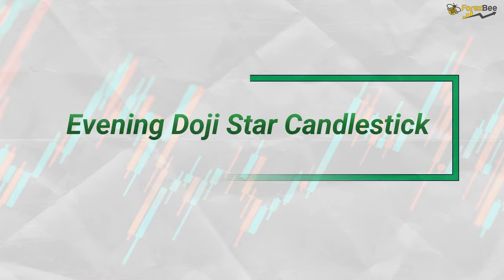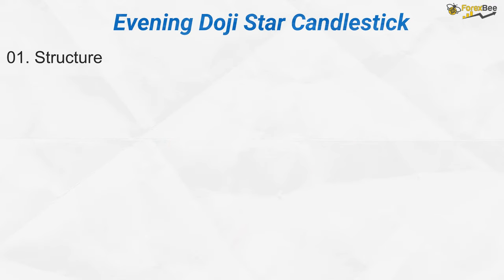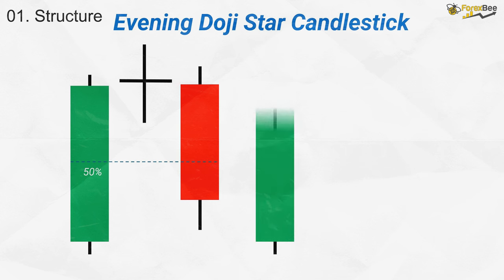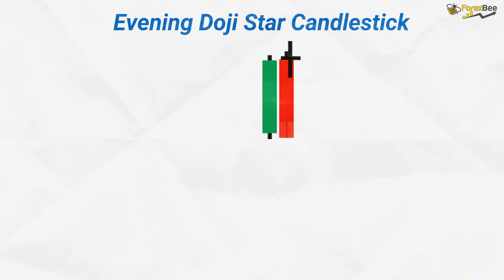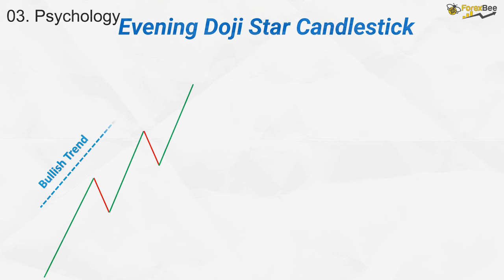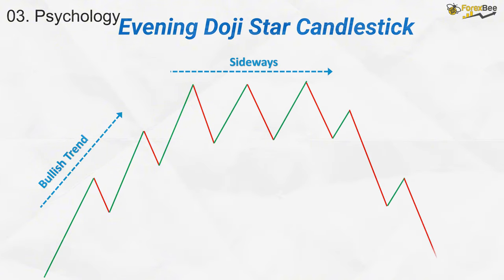Now, let's discuss the Evening Doji Star candlestick pattern. This pattern consists of three candles and typically signals a potential bearish reversal. The first candle is a large-bodied bullish candle indicating strong buying pressure. The second candle is a doji, representing indecision as the buying momentum stalls. The third candle is a large-bodied bearish candle, suggesting that sellers have taken control. A crucial condition is that the closing price of the third bearish candle should fall below at least 50% of the first bullish candle's body. The Evening Doji Star typically forms at supply or resistance zones, and psychologically reflects a shift in market sentiment from bullish to bearish, signaling fading buying momentum and growing seller dominance.